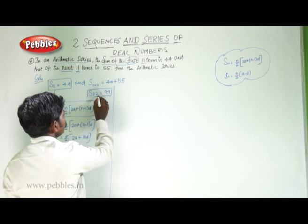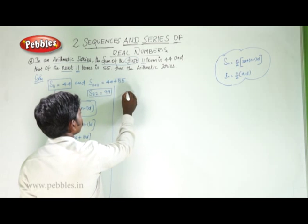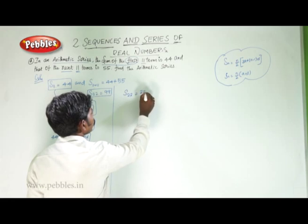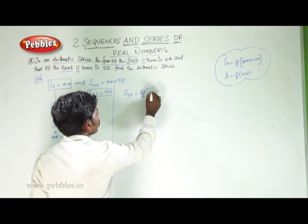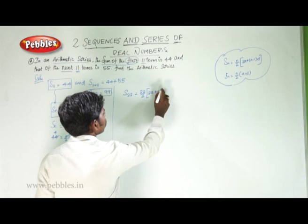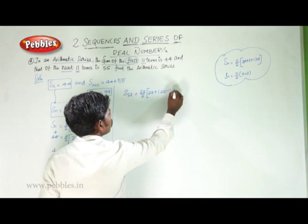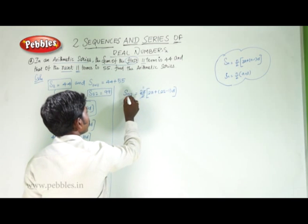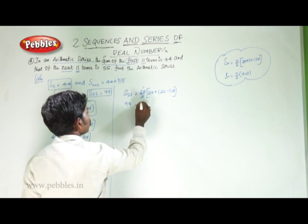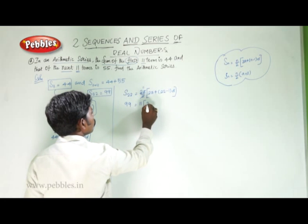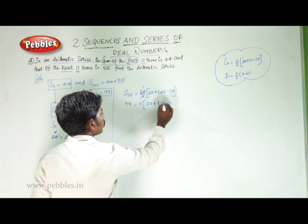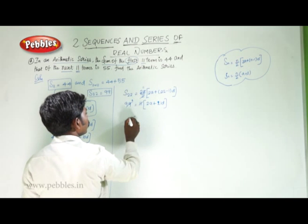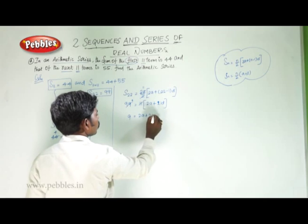The second piece of information: S22 is equal to 99. Applying the formula with n equal to 22, we get 22 by 2 into 2a plus 22 minus 1 into d. Simplifying, 99 is equal to 11 into 2a plus 21d, giving us 9 is equal to 2a plus 21d. This is the second equation.